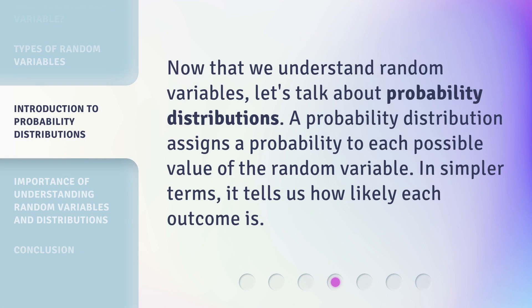Now that we understand random variables, let's talk about probability distributions. A probability distribution assigns a probability to each possible value of the random variable. In simpler terms, it tells us how likely each outcome is.